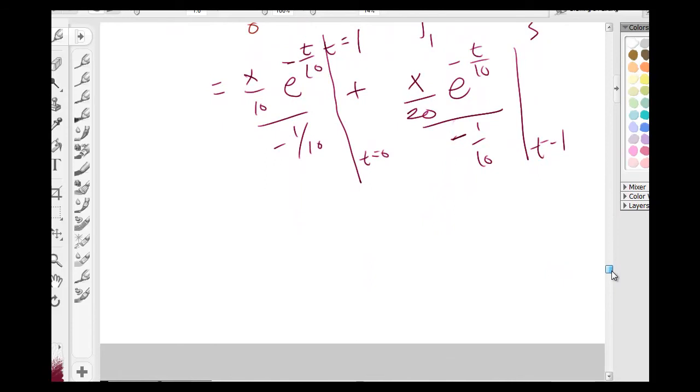Alright, after you do all of this, and I'm way too tired to do that here, you're going to get 0.1772X, and that should equal to 1,000.